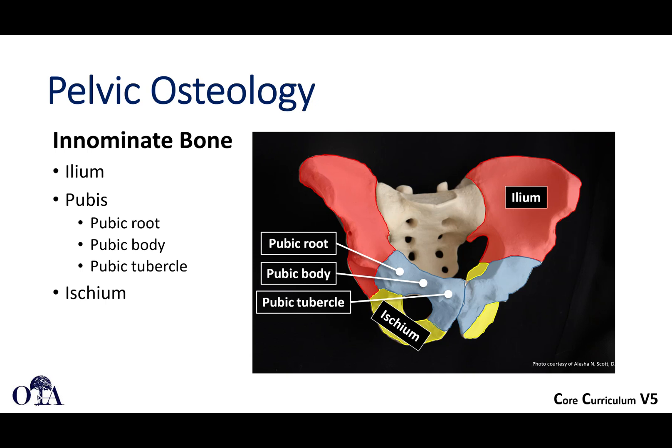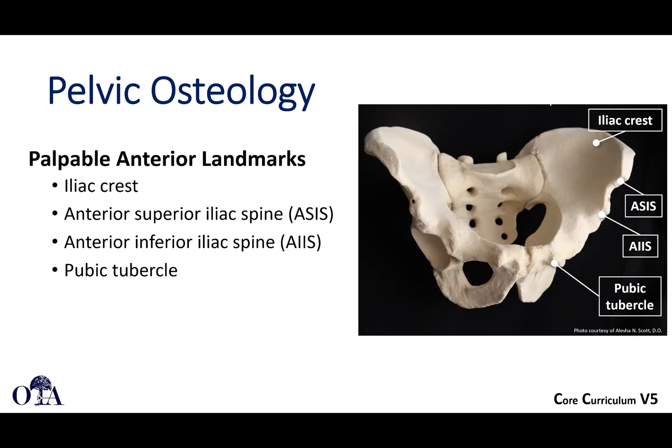We divide things up by saying the ileum, shown in red, the pubic bone or pubis, which has a root, body, and tubercle, and then the ischium. These are separate bones that fuse during childhood, as nicely shown here.